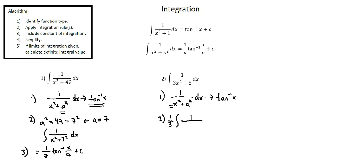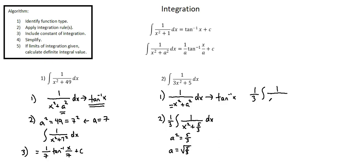Rewriting our expression: factoring out 3 from 3x squared leaves us with x squared. And factoring 3 out of the second term 5 gives us 5 over 3, with respect to x. Now we can identify our a squared term. In this example, a squared is 5 over 3, and a is the square root of 5 over 3. Again, we're only considering the positive root of a squared. I'll rewrite with the a term: 1 third times the integral of 1 over x squared plus a squared, where a is the square root of 5 over 3, with respect to x.